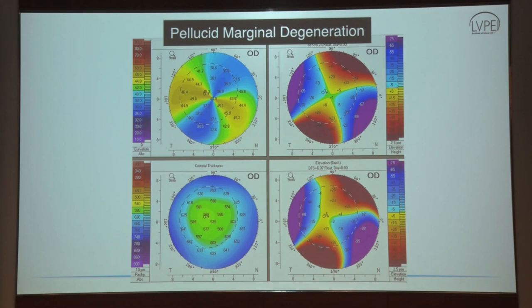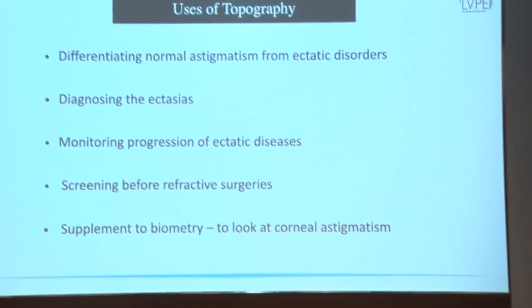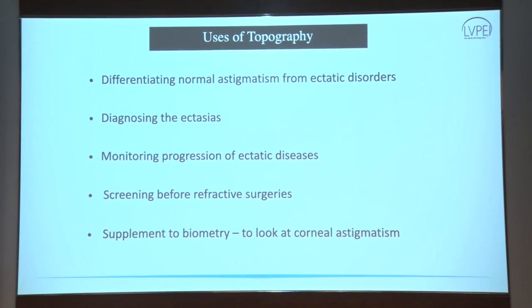This map with a flattened keratometry and no elevation on either map, combined with corresponding thinning, is an example of a post-refractive surgery cornea — it has been ablated, so it appears flat, depressed, and thinned. The uses of topography include: differentiating normal astigmatism from ectatic disorders, diagnosing ectasias, monitoring progression of ectatic diseases, screening before refractive surgeries for any ectatic problems, and as a supplement to biometry for assessing corneal astigmatism.